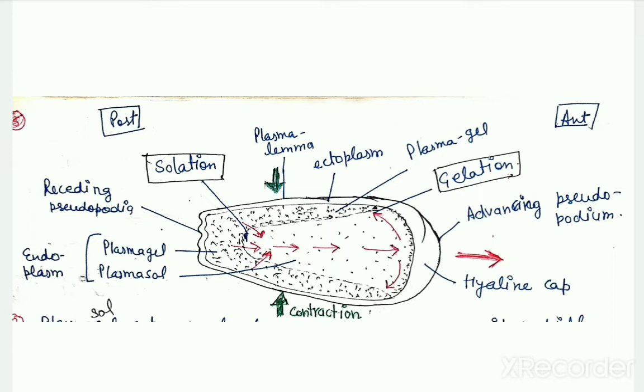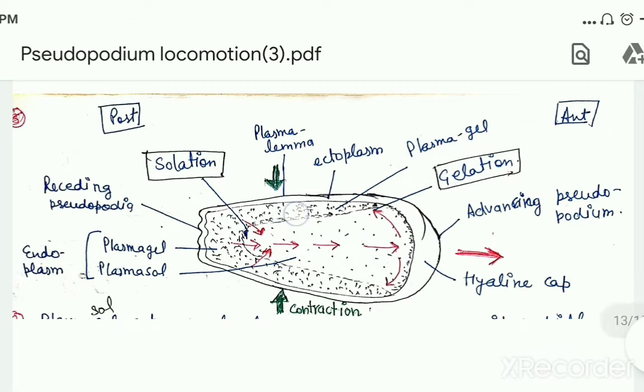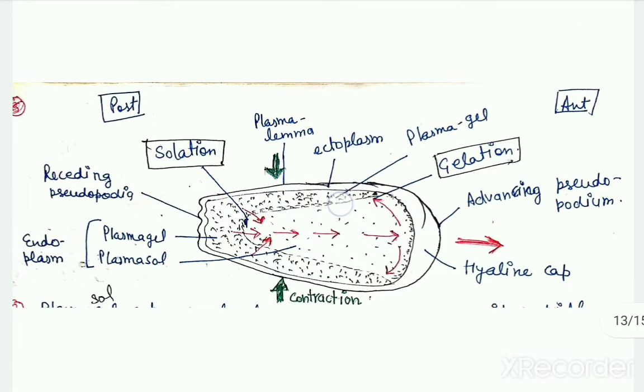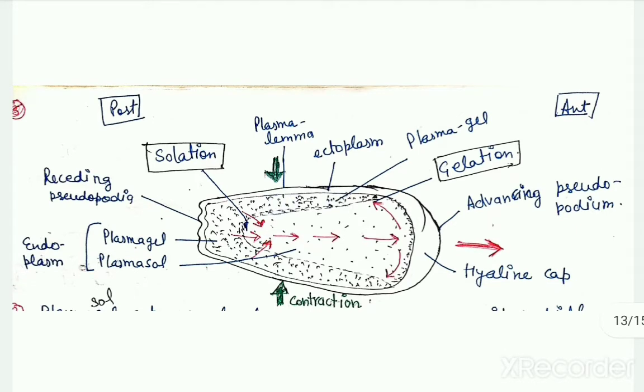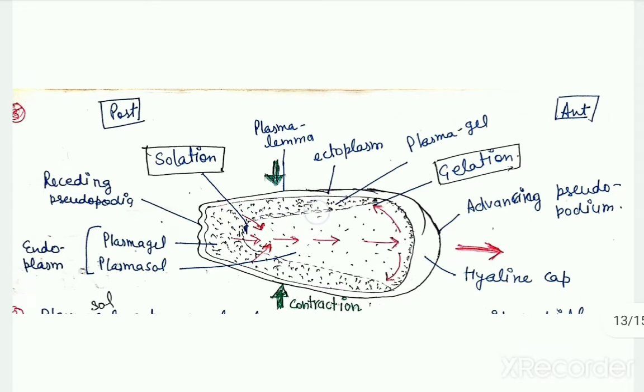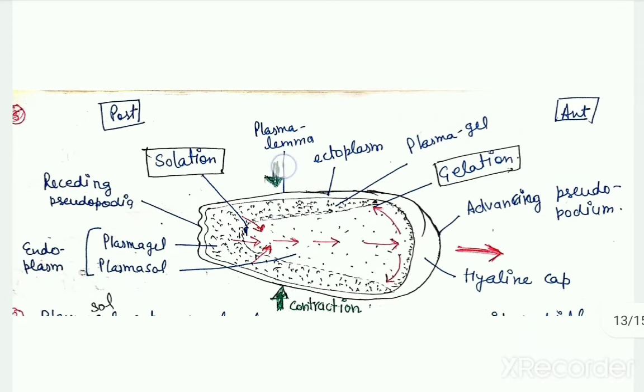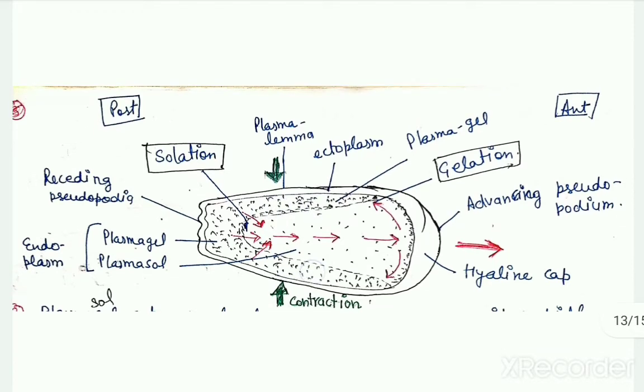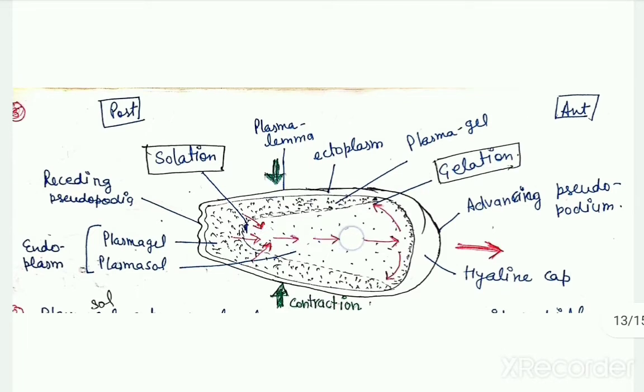The second thing that happens is contraction in the gel. This part of the protoplasm we call the gel tube. In this gel tube, actin and myosin filaments are present. These actin and myosin proteins undergo sliding movement, which causes contraction in the plasma lemma or in the gel tube. Due to this contraction, the fluid plasma sol starts flowing forward.